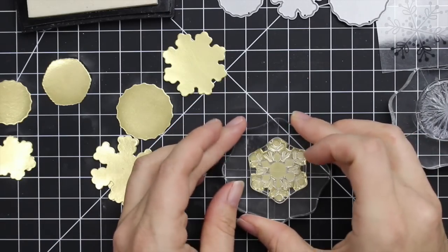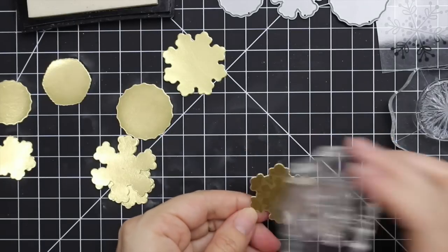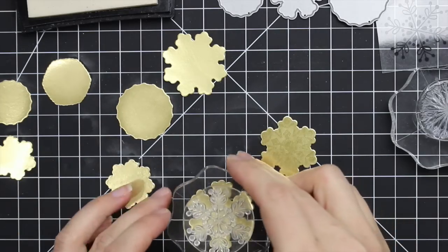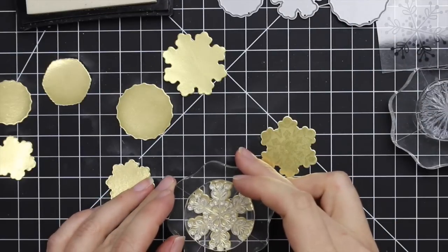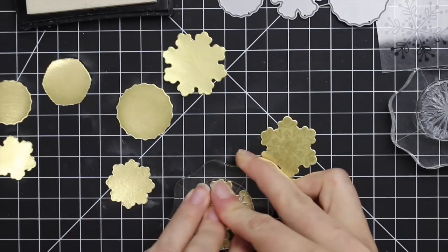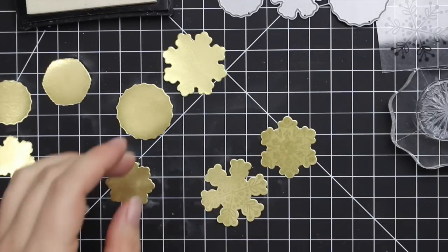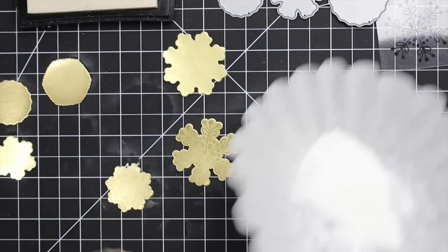I die cut the cardstock with the Snowflake Flurry dies and then coated everything with my anti-static powder. I'm trying really hard not to touch these die cuts with my fingers because you don't want to get the oils from your fingers on the cardstock. That would defeat the purpose of the anti-static powder because the embossing powder would stick to any spots where you're touching with your fingers.